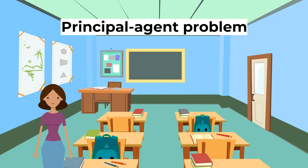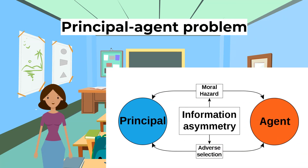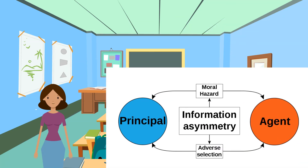The last topic for today is the principal-agent problem. This is when the goals of the principal — the person who gains or loses from the decision — are different from the agents, those making decisions on behalf of the principal. One example is education, where the child is the principal and the agents are parents and governments. The child has imperfect information as they do not see the benefits of education and so will devote too few resources to education if allowed.